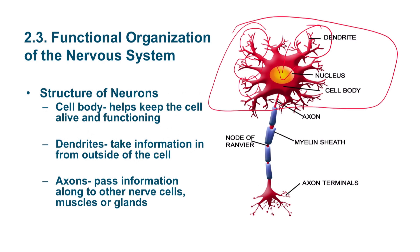Then we have the axons. The axons pass information along to other nerve cells. The axon is typically one single strand, and at the very end of the axon are axon terminals, which provide a very efficient way to get information from the cell out to the rest of the body.